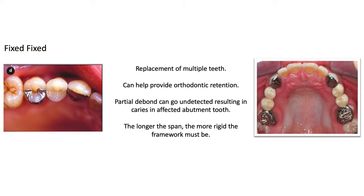The fixed-fixed design is the option of choice when you have a longer span and need to replace multiple teeth. For example, if your premolars were missing in the upper arch, you could place a wing on the three and an occlusal coverage retainer on the six, with the four and five as pontics, as shown on screen. They're also good post-orthodontic treatment, but they have a higher chance of secondary caries if you get a partial debonded retainer.